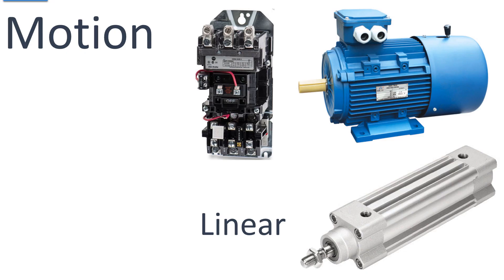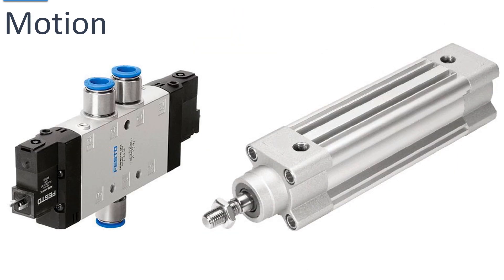Linear motion goes to either hydraulic or pneumatic cylinders. This is a pneumatic cylinder, and it uses a pneumatic solenoid valve. This valve has two solenoids on it, one on each end, and it electrically, by way of electromagnetic force, shifts a spool inside of the valve body to control the direction of the cylinder.